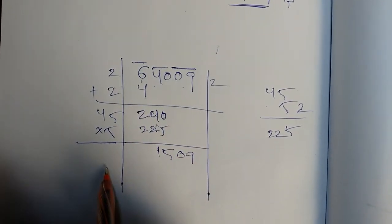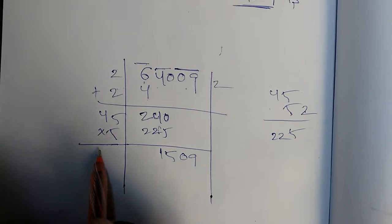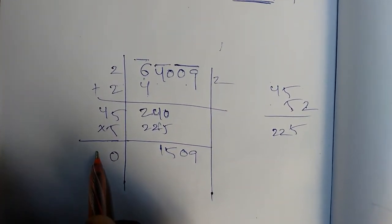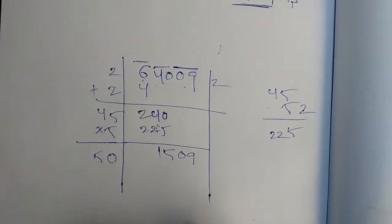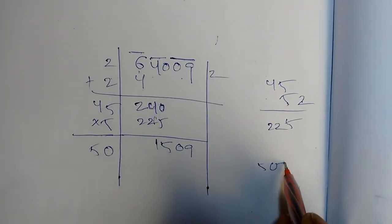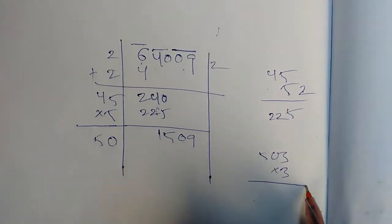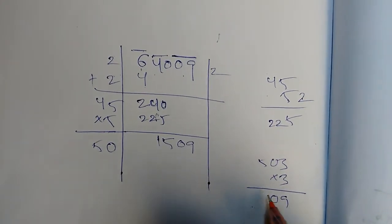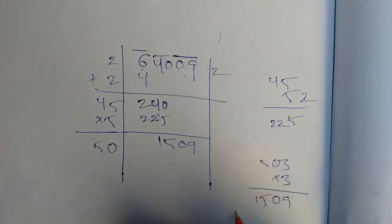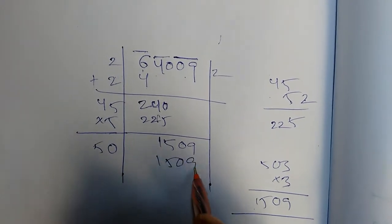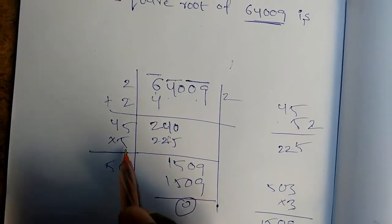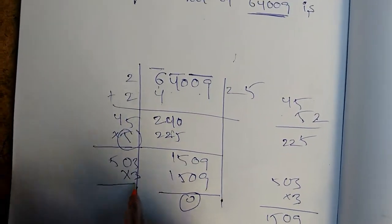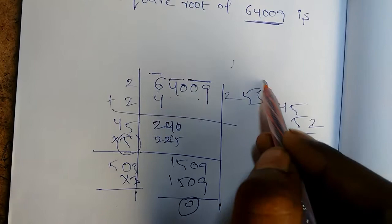Here is the double. 50. Choose 50. And 3 is equal — this is 253.